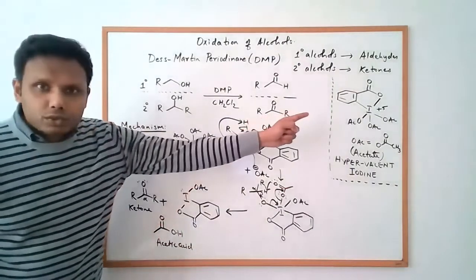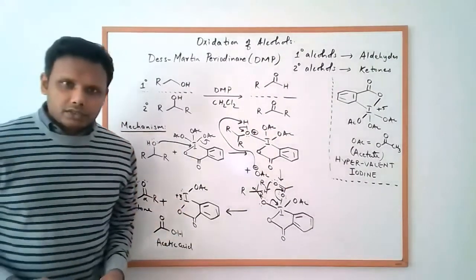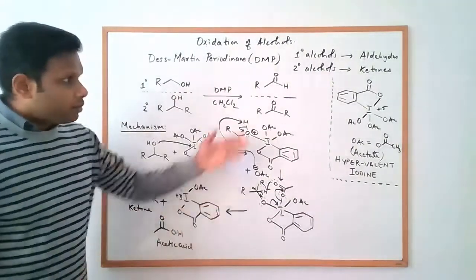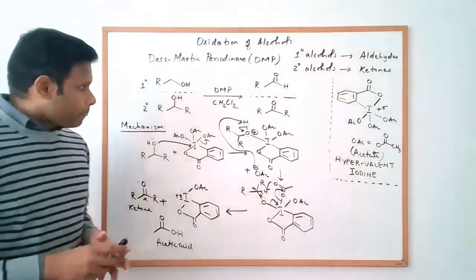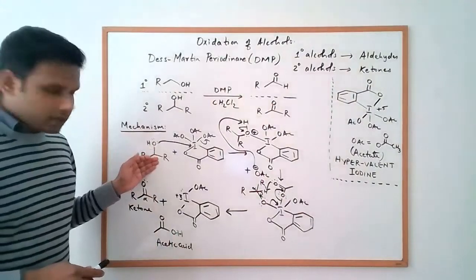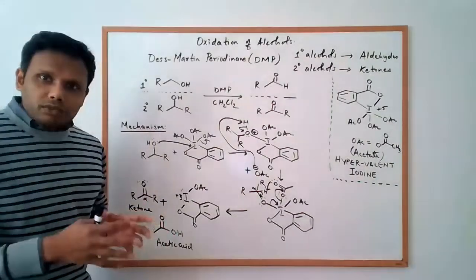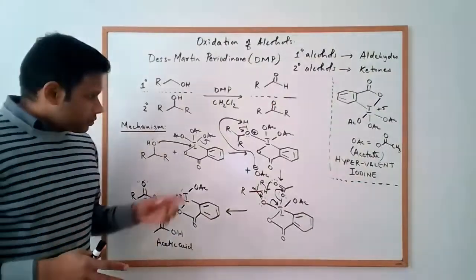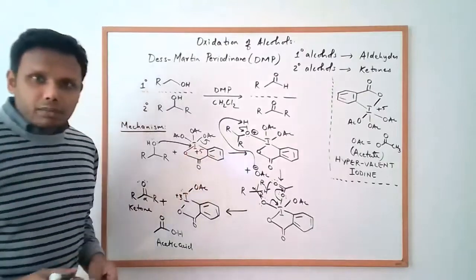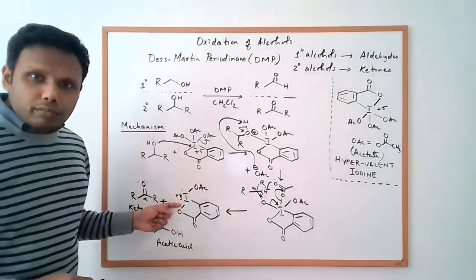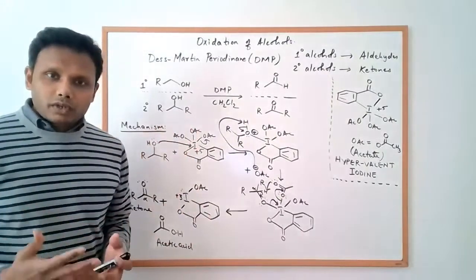So if you compare that to the starting material, the DMP, the iodine now is only in a plus three oxidation state. So it's still hypervalent iodine, but in a lower oxidation state. So keeping with the theme of what we've been seeing, when one of the species is getting oxidized, so the secondary alcohol got oxidized to the ketone, simultaneously, there has to be something else that will get reduced. So the hypervalent iodine reagent, which started off with an iodine in a plus five oxidation state, now goes to a plus three oxidation state. So it's reduced by two electrons. So that's a common theme for all redox reactions.